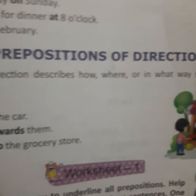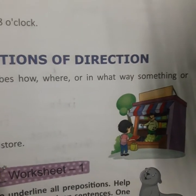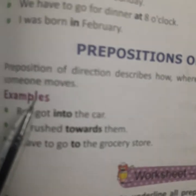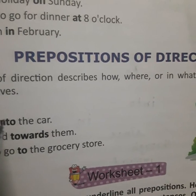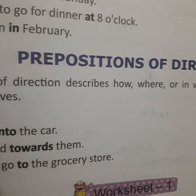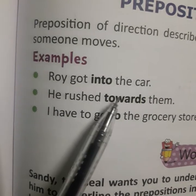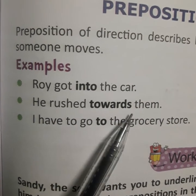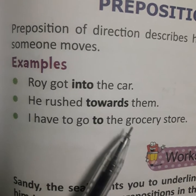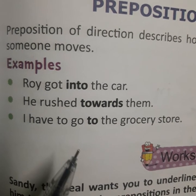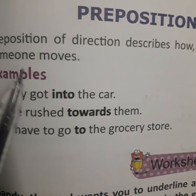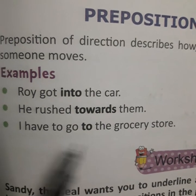Next is preposition of direction. Preposition of direction describes how, where, or in what way something or someone moves. Preposition of direction बताता है कि कोई चीज कैसे, कहां और किस तरीके से move कर रही है — जो direction के बारे में बताता है. See the examples: 'Roy got into the car.' 'He rushed towards them.' 'I have to go to the grocery store.' So, 'into,' 'towards,' and 'to' — all these are prepositions of direction.